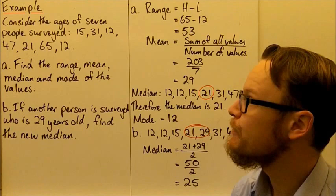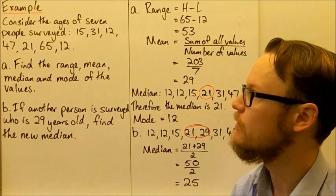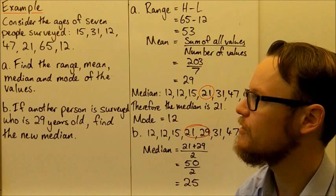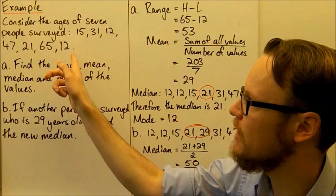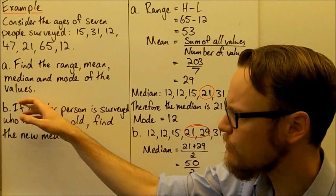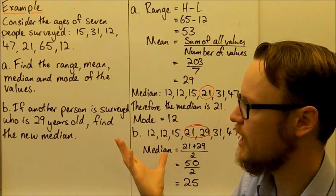Let's look at an example of the sort of thing you'll need to be able to do. Given some data, we need to find the different summary values: range, mean, median and mode. We have the ages of 7 people that were surveyed: 15, 31, 12, 47, 21, 65 and 12. We're asked to find the range, mean, median and mode of these values.